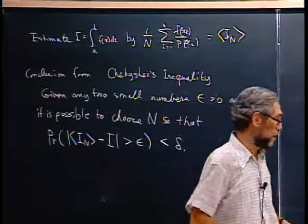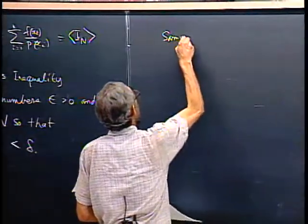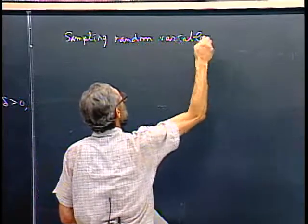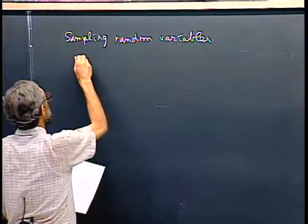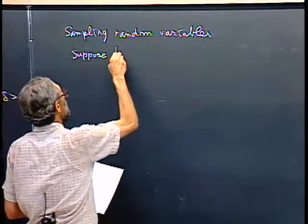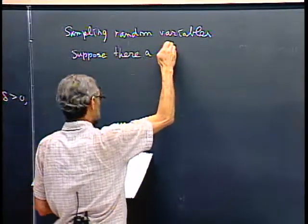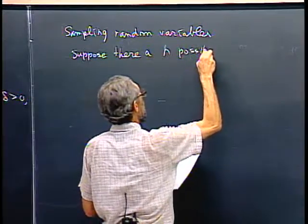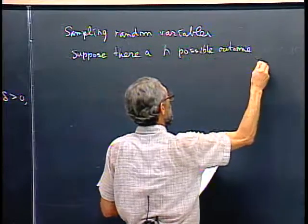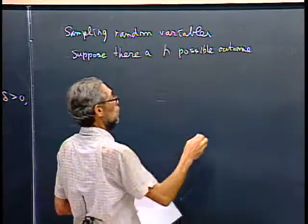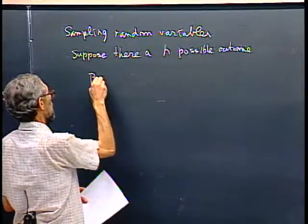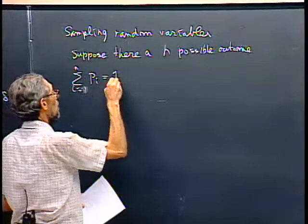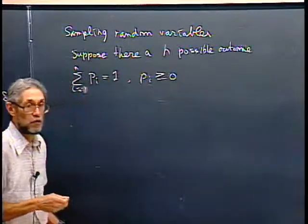So instead today I want to talk about sampling random variables. I'll start with the finite case. Suppose there are n possible outcomes of an experiment with probabilities p_i for i = 1 to n, such that the sum of p_i equals 1 and all p_i ≥ 0. So I'm back to the discrete case — I'll do that first.